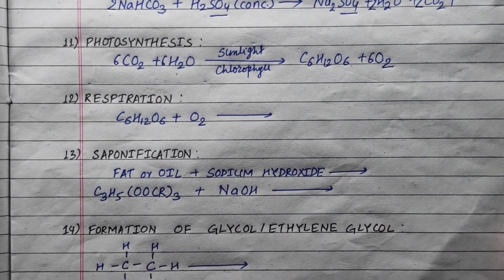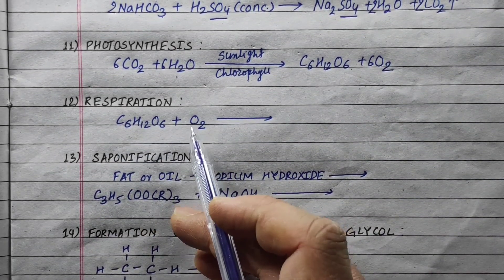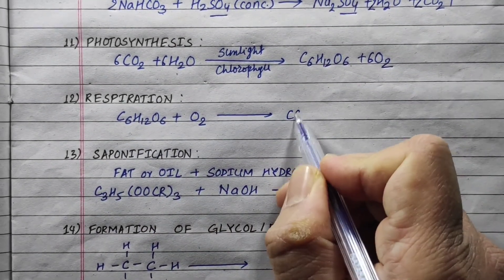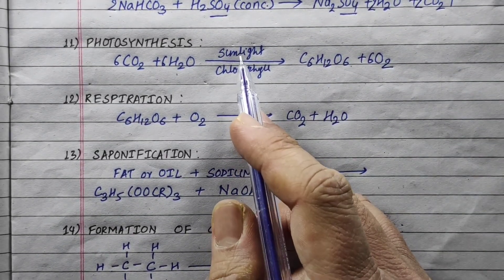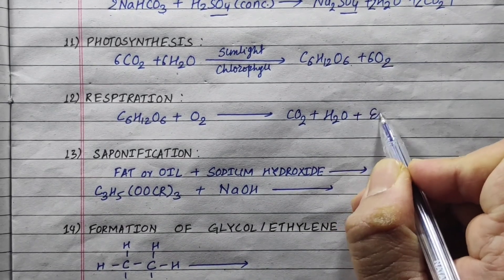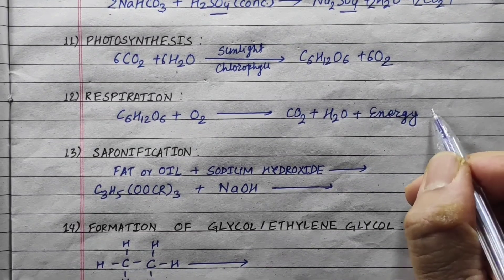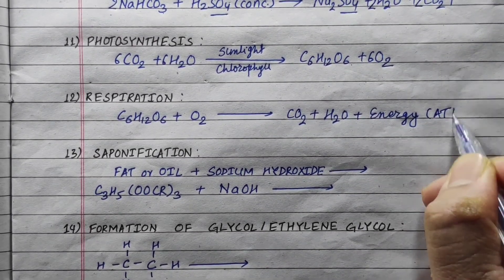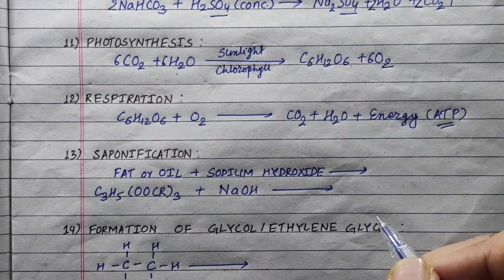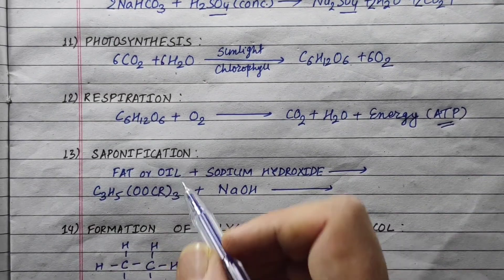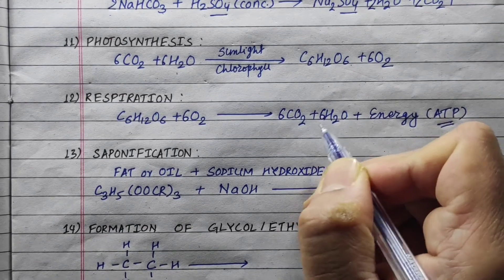The opposite reaction of photosynthesis is respiration. When glucose is oxidized, heat is released, producing carbon dioxide and water, along with energy released in the form of ATP — adenosine triphosphate. Balanced: C₆H₁₂O₆ + 6O₂ → 6CO₂ + 6H₂O + energy (ATP).